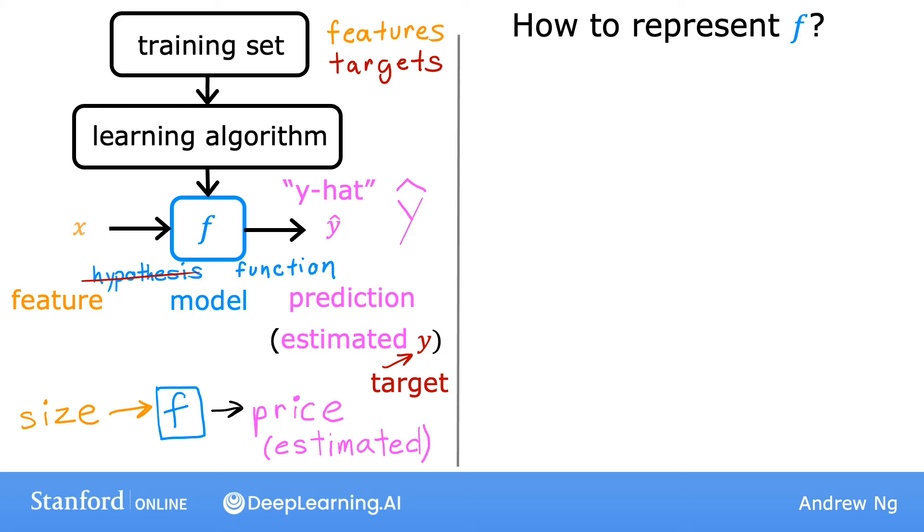For now, let's stick with f being a straight line. So your function can be written as f subscript w comma b of x equals w times x plus b. I'll define w and b soon, but for now, just know that w and b are numbers.